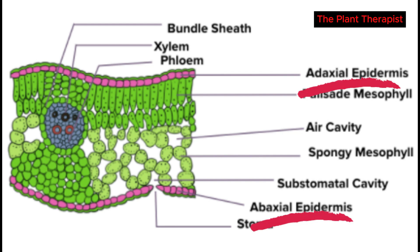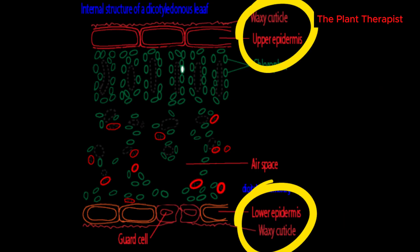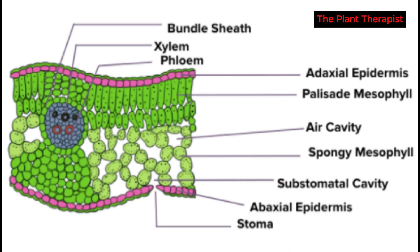A waxy coating, that is the cuticle, is normally present, although it may not be visible with an ordinary light microscope without being stained. The lower epidermis of most plants generally resembles the upper epidermis, but it typically has a thinner layer and is perforated by numerous tiny pores called the stomata.